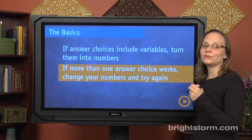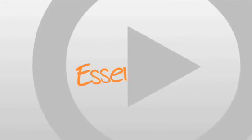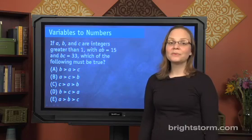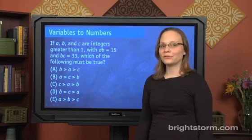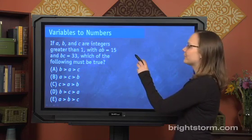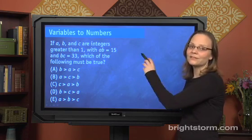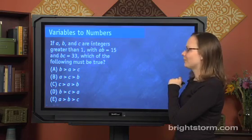Let's look at all this in more detail using some examples. So here we have an example of the first new principle, which is that sometimes you have to turn variables in the answer choices into numbers as well. But we're still going to go through the same three basic steps, so let's do that. Let's start by reading the problem, though.